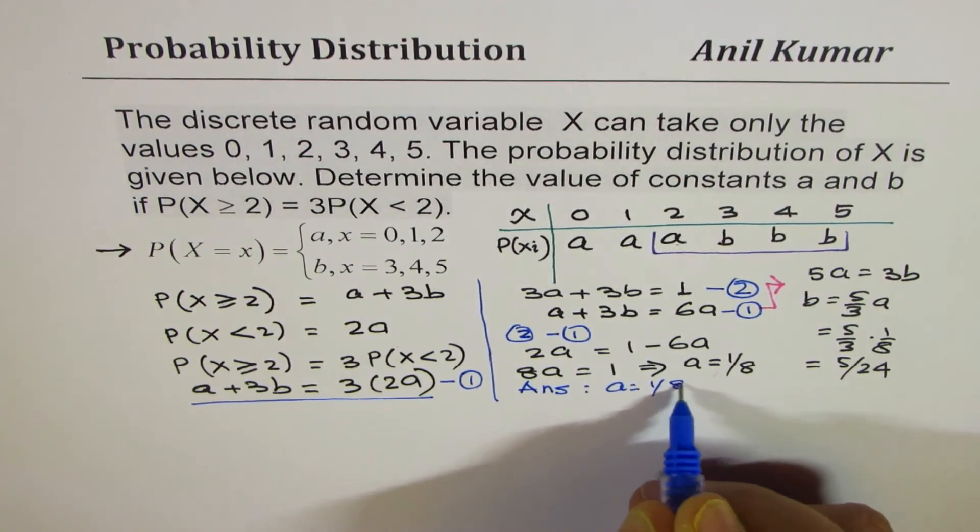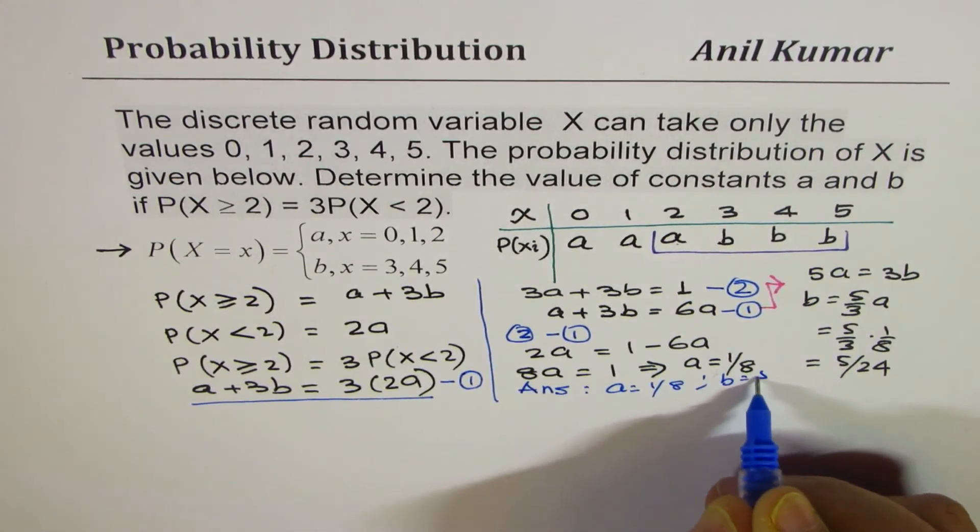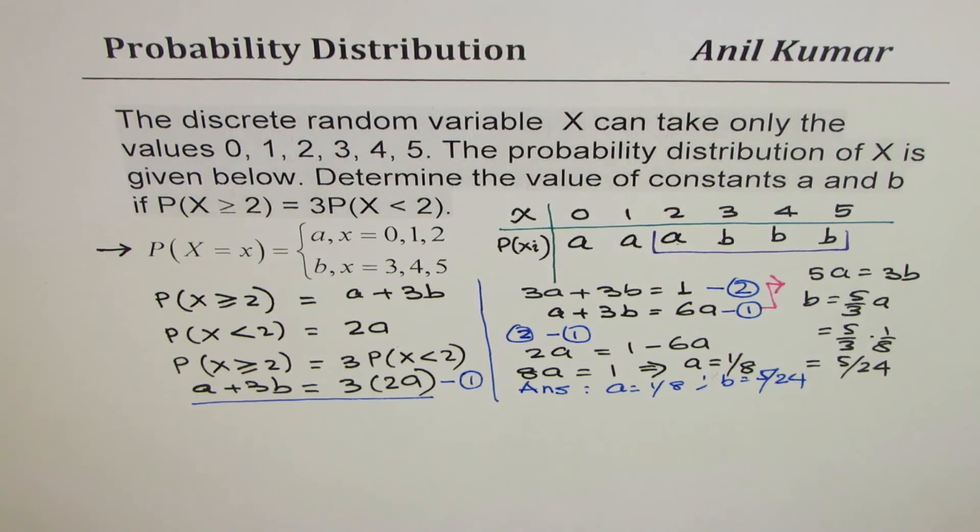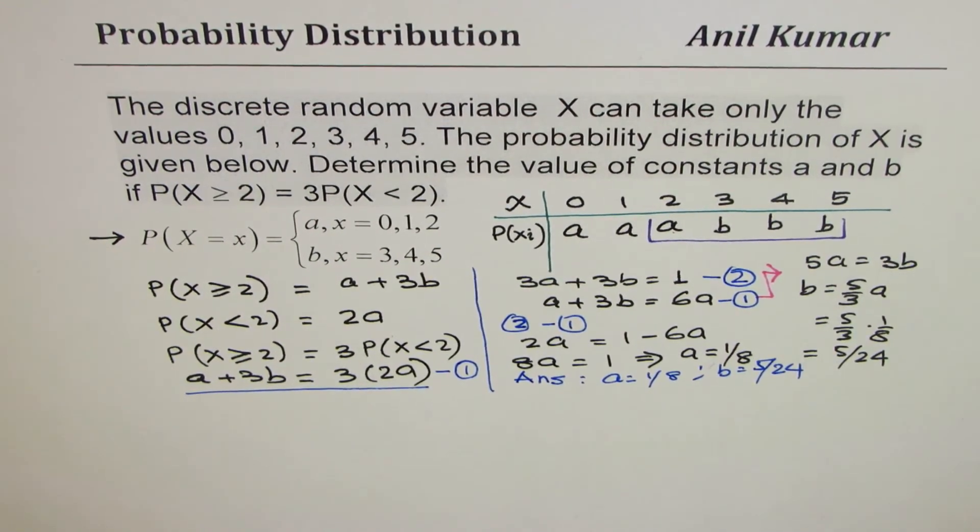So we get the values of a and b. So the answer here is a equals to 1 over 8 and b equals to 5 over 24. So that is how you should solve this particular question. I hope that helps.